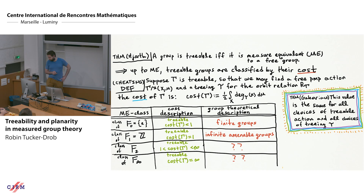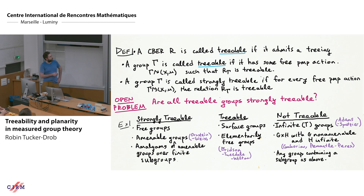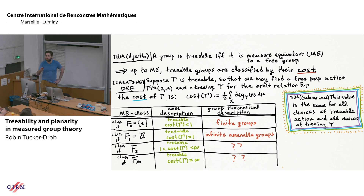Regarding the open problem of whether all treeable groups are strongly treeable: my hunch is the answer is yes, but there would be no direct proof. The way to prove it would be to first give an algebraic description of the class of treeable groups and then observe that they're all strongly treeable. But you can always be surprised.